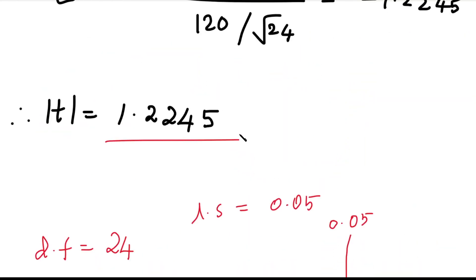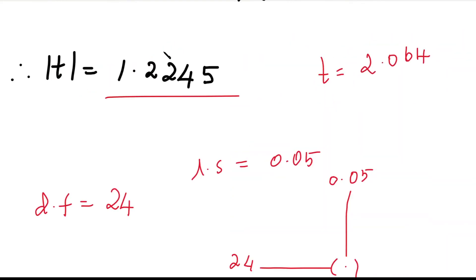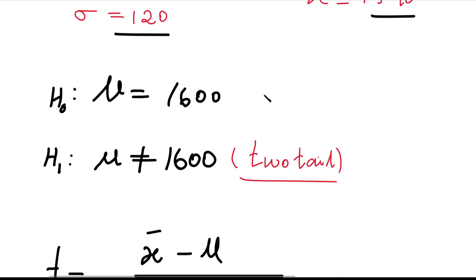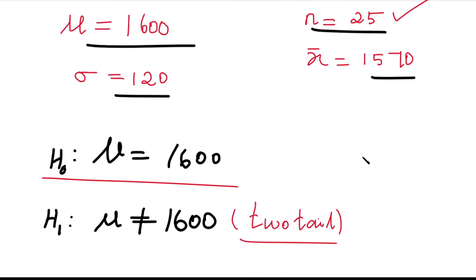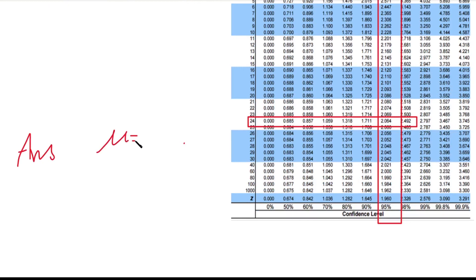The calculated value of t is 1.2245, and the table value of t is 2.064. Since the calculated value of t (1.2245) is less than the table value of t (2.064), we accept H0. That is, μ = 1600 — meaning the company's claim that the average lifetime of the light bulbs is 1600 hours is acceptable.